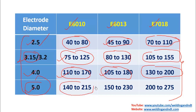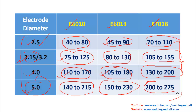For 5.0mm diameter electrode: E6010 current range is 140 to 215 amperes, E6013 current range is 150 to 230 amperes, and E7018 current range is 200 to 275 amperes. You can go to Table A.4 and determine the current range for any electrode.